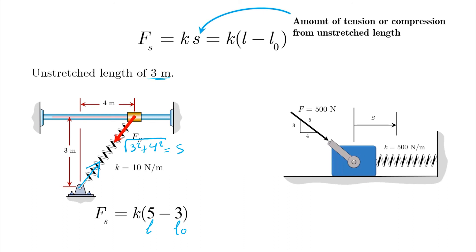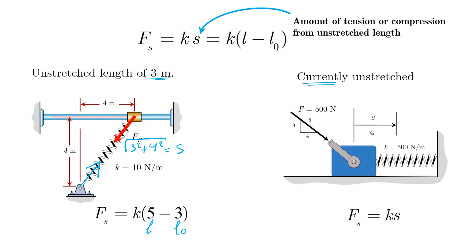Another case is when no unstretched length is given, but the problem states the spring is currently unstretched and asks for the spring force after stretching or compressing by displacement s. If we compress the spring by s, the spring force equals k times s, and because it is compressed, it pushes outward on both sides — pushing the wall and pushing the block — trying to return to its original unstretched state. That is how we determine the direction of the spring force in compression.